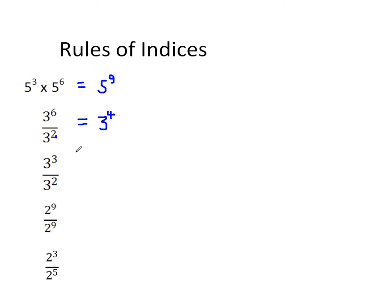A couple of special cases. By our rule, 3 cubed divided by 3 squared should equal 3 to the power 1. Writing it out: 3 times 3 times 3 divided by 3 times 3, you're just left with 3 on the top. So 3 to the power 1 is just 3. There's nothing special about 3 here — anything to the power 1, the power 1 doesn't really do anything. 18 to the power 1 is 18, 76 to the power 1 is 76.